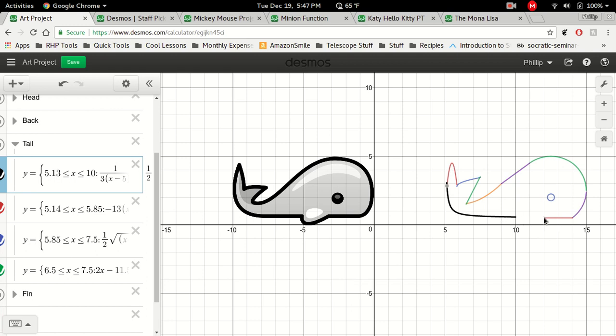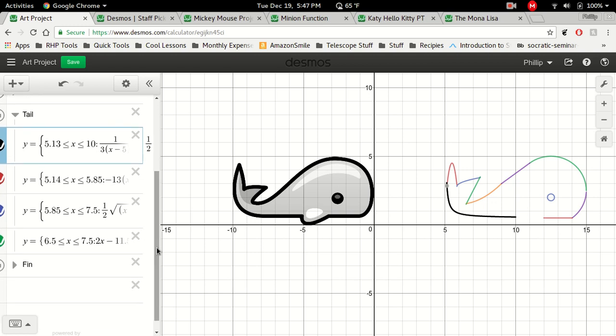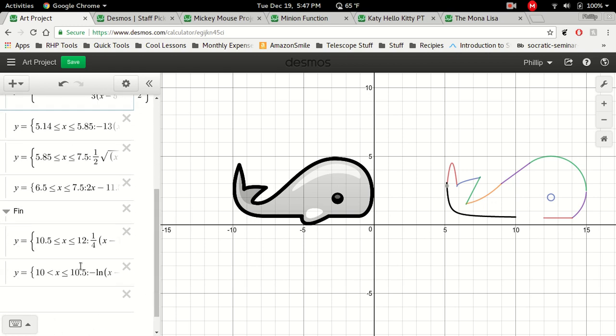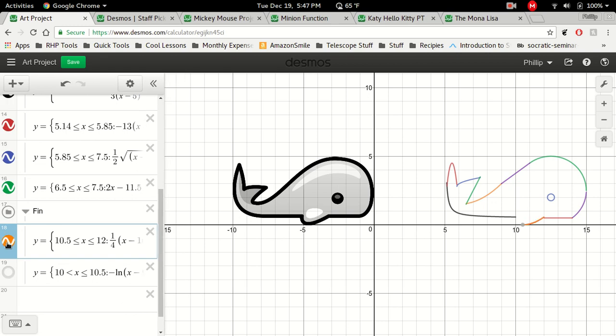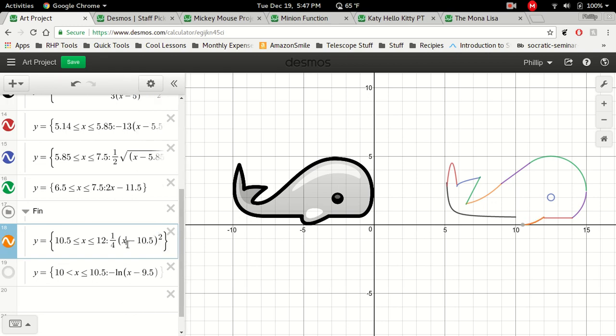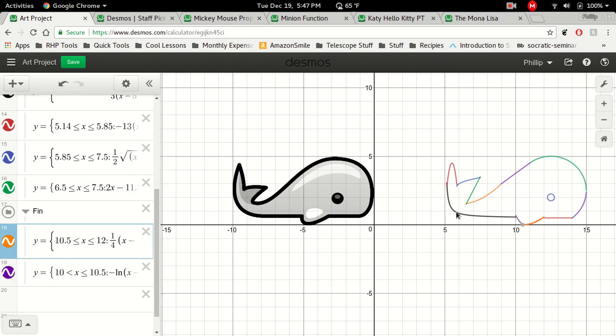So the only part left to do on the whale here is this lower fin. So we'll open up the fin here. And I started with, what function I used here? I used a quadratic that I stretched out using one fourth. So I made it really flat to create this bottom edge of the whale fin. And then I used a logarithm function to create the back side of the tail fin, bringing it all together, creating my whale.